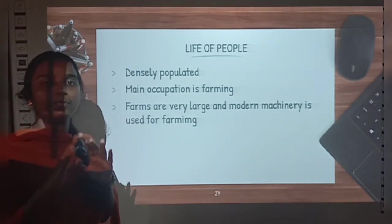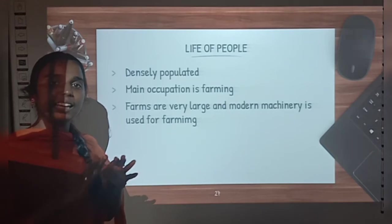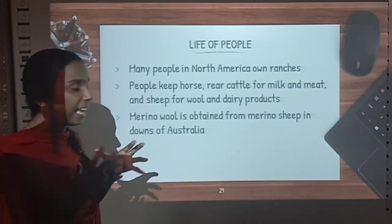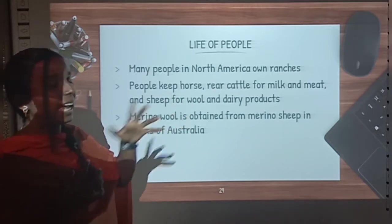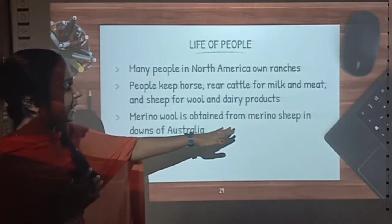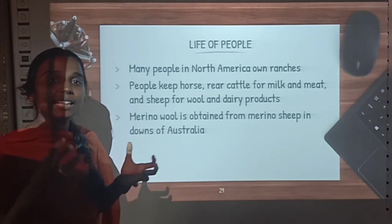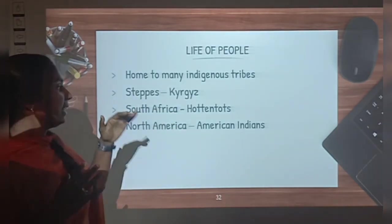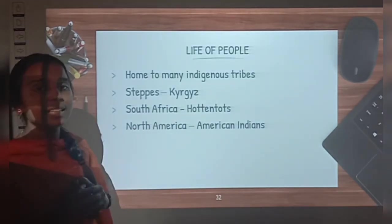What about the life of the people in the temperate zone? It is densely populated as most of the grassland area has been destroyed for agriculture. Their main occupation is farming — farms are very large and they use modern machinery for cultivation. Many people in North America own ranches where they keep horses and rear cattle for milk and meat, and sheep for wool and dairy products. Merino wool is obtained from merino sheep in the downs of Australia — a high quality wool. These grasslands are home to many indigenous tribes: in the steppes they are known as Kyrgyz, in South Africa as Hottentots, and in North America as American Indians.